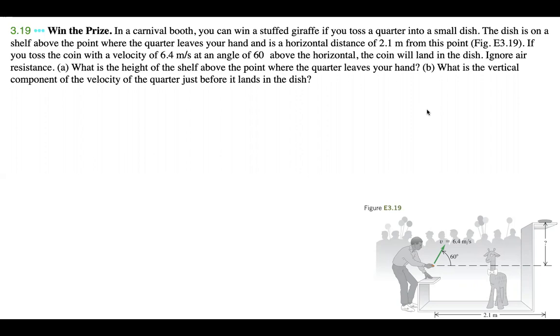is a horizontal distance of 2.1 meters from this point, figure E3.19. If you toss the coin with a velocity of 6.4 meters per second at an angle of 60 degrees above the horizontal, the coin will land in the dish. Ignore air resistance. (a) What is the height of the shelf above the point where the quarter leaves your hand? (b) What is the vertical component of the velocity of the quarter just before it lands in the dish?